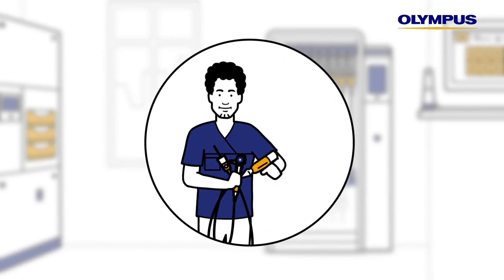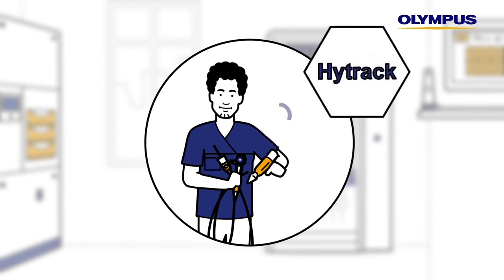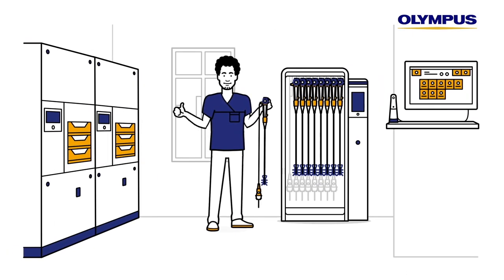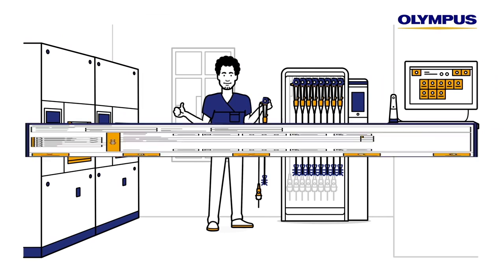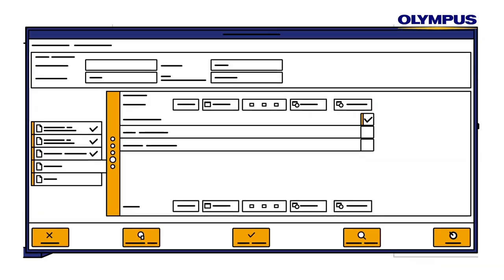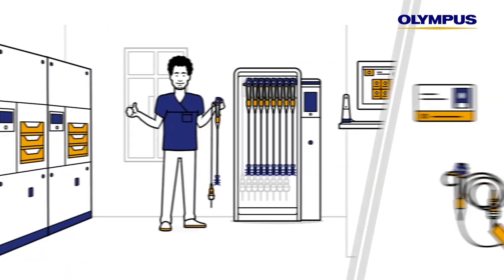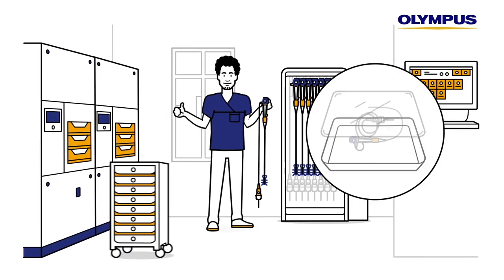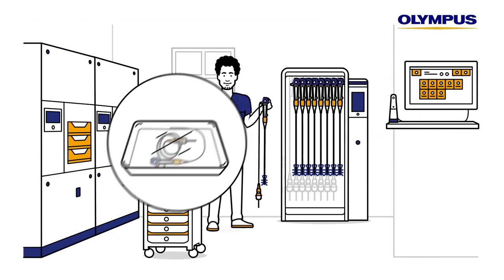If the endoscope is used wet or if it is dried manually, these alternative work steps may also be documented in HITRAC. After the endoscope has been checked for damage, it is released in HITRAC for reuse and this is documented. There is also the option of generating a label. Great! Now it's ready to be used for the next patient.